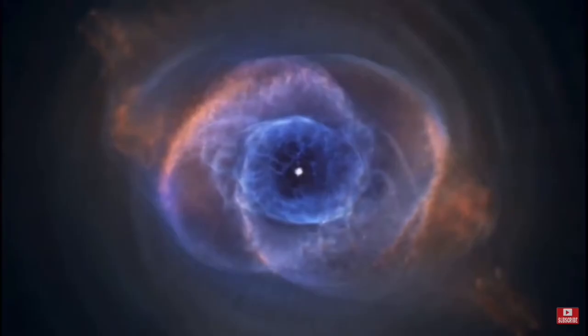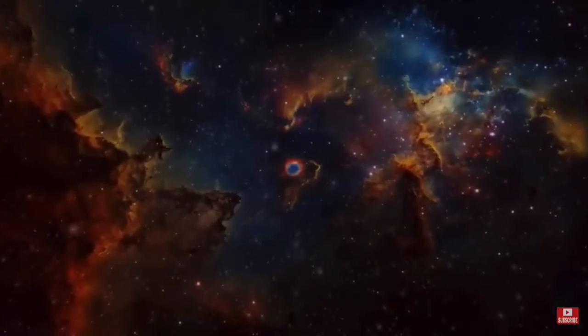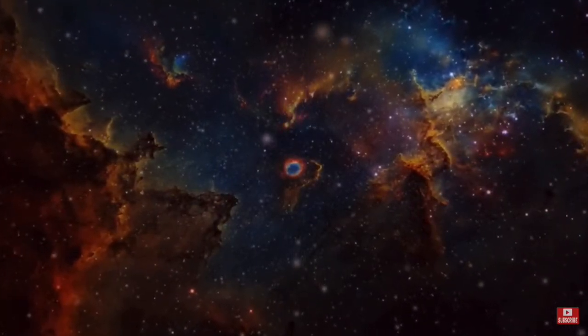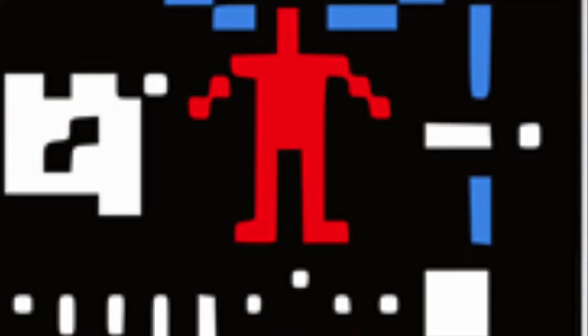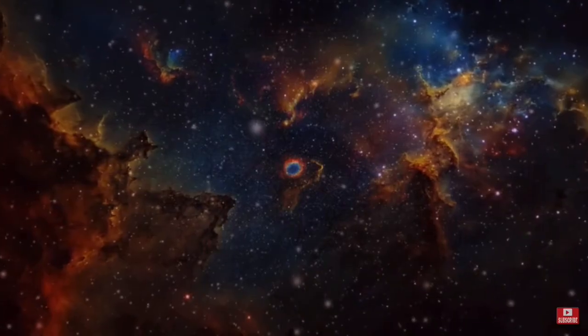Then there's the Arecibo message, which is a message designed by Frank Drake that was beamed into space. The message is in binary, and when you convert it to an image, it shows pictures of man, DNA, and the Arecibo telescope, among other things.